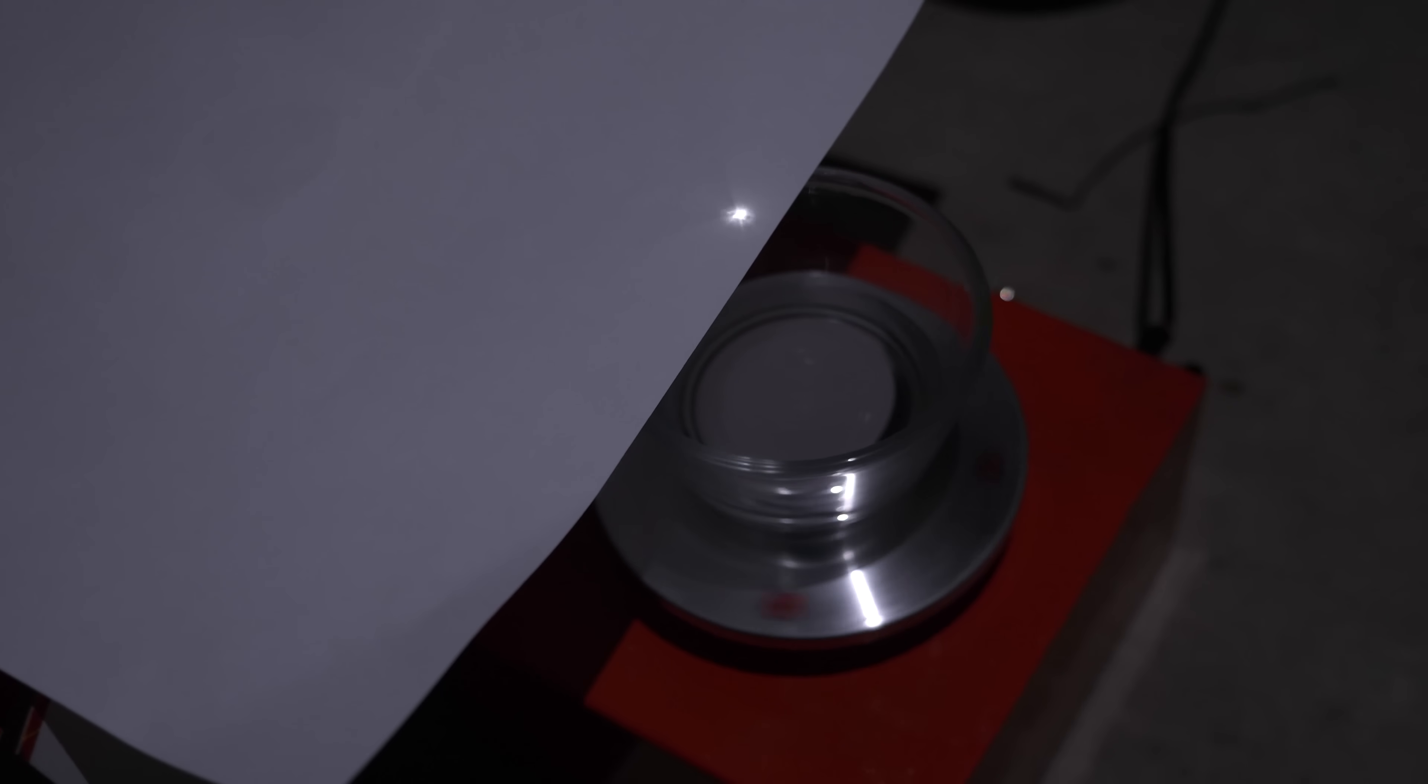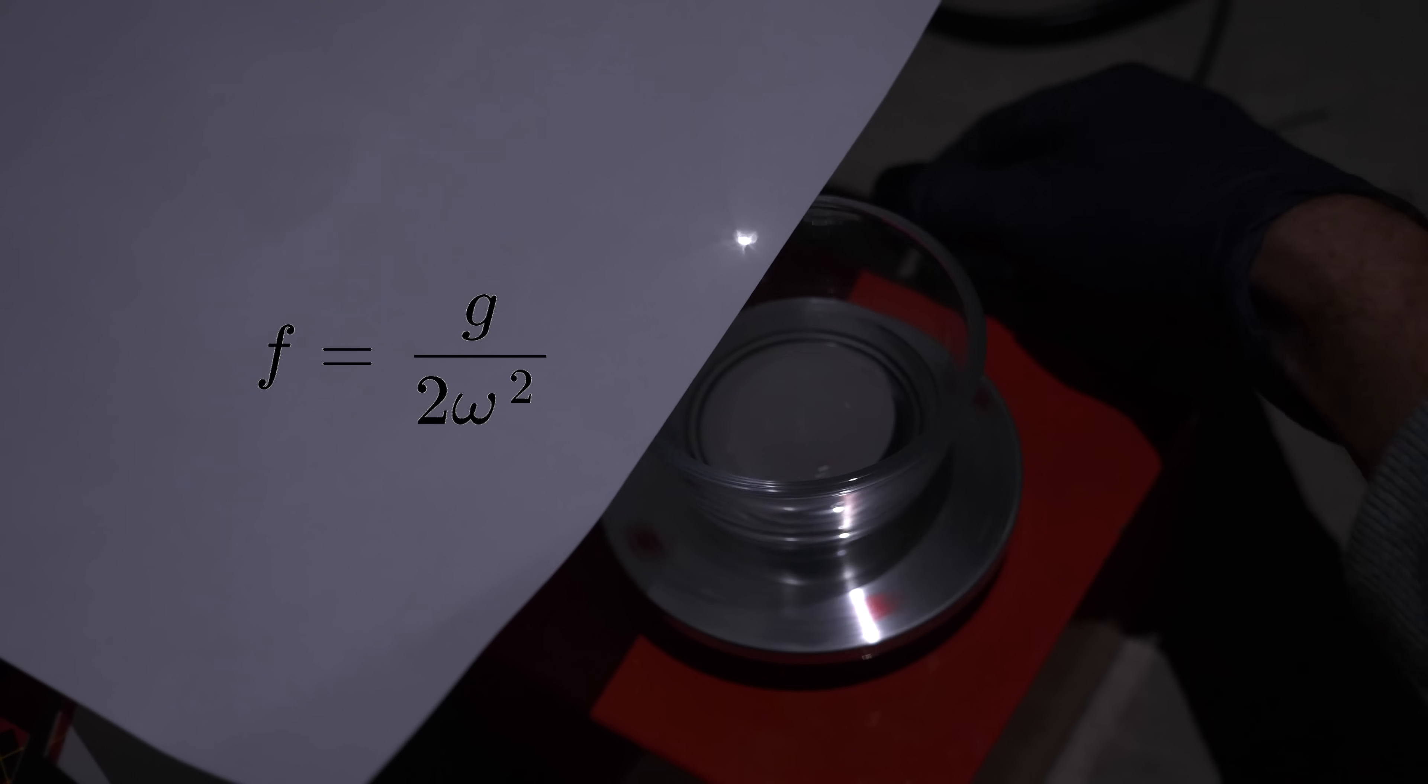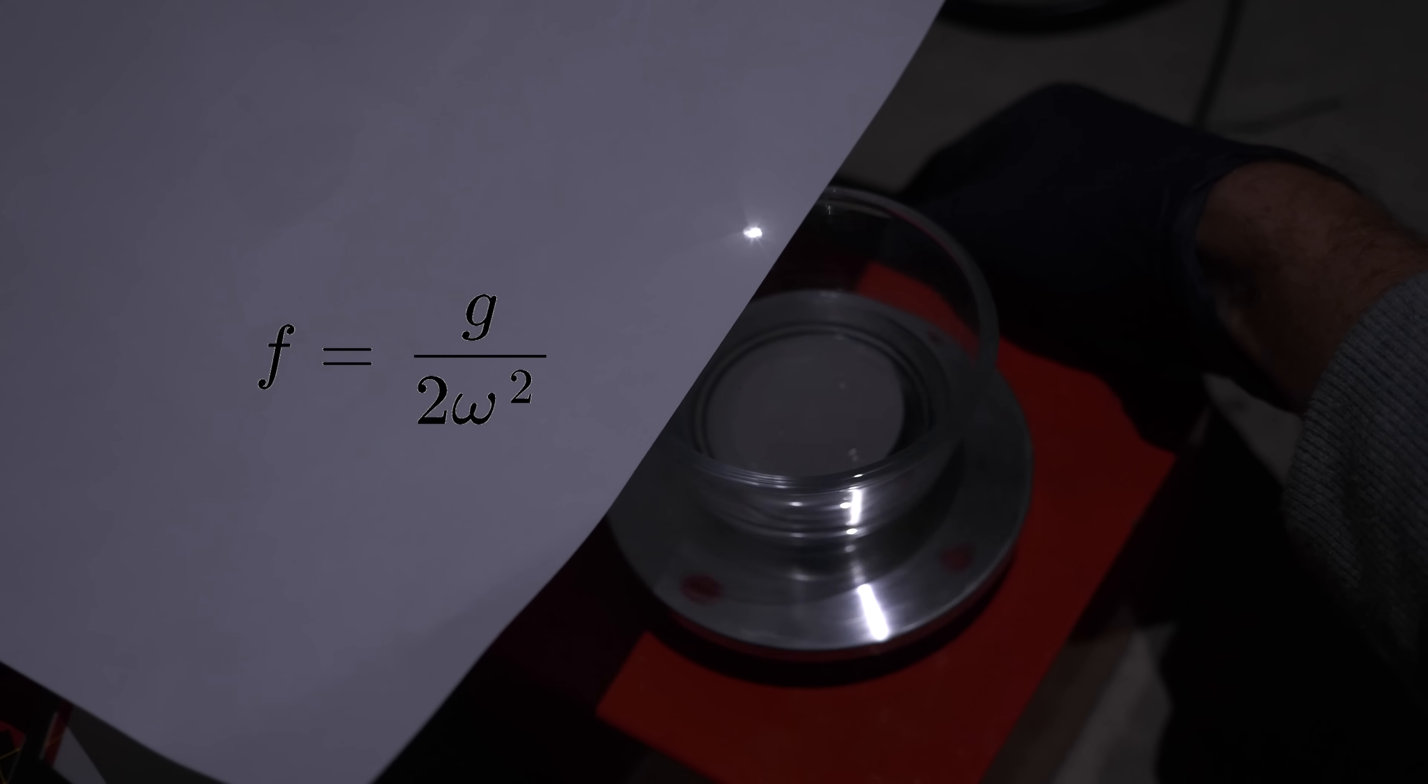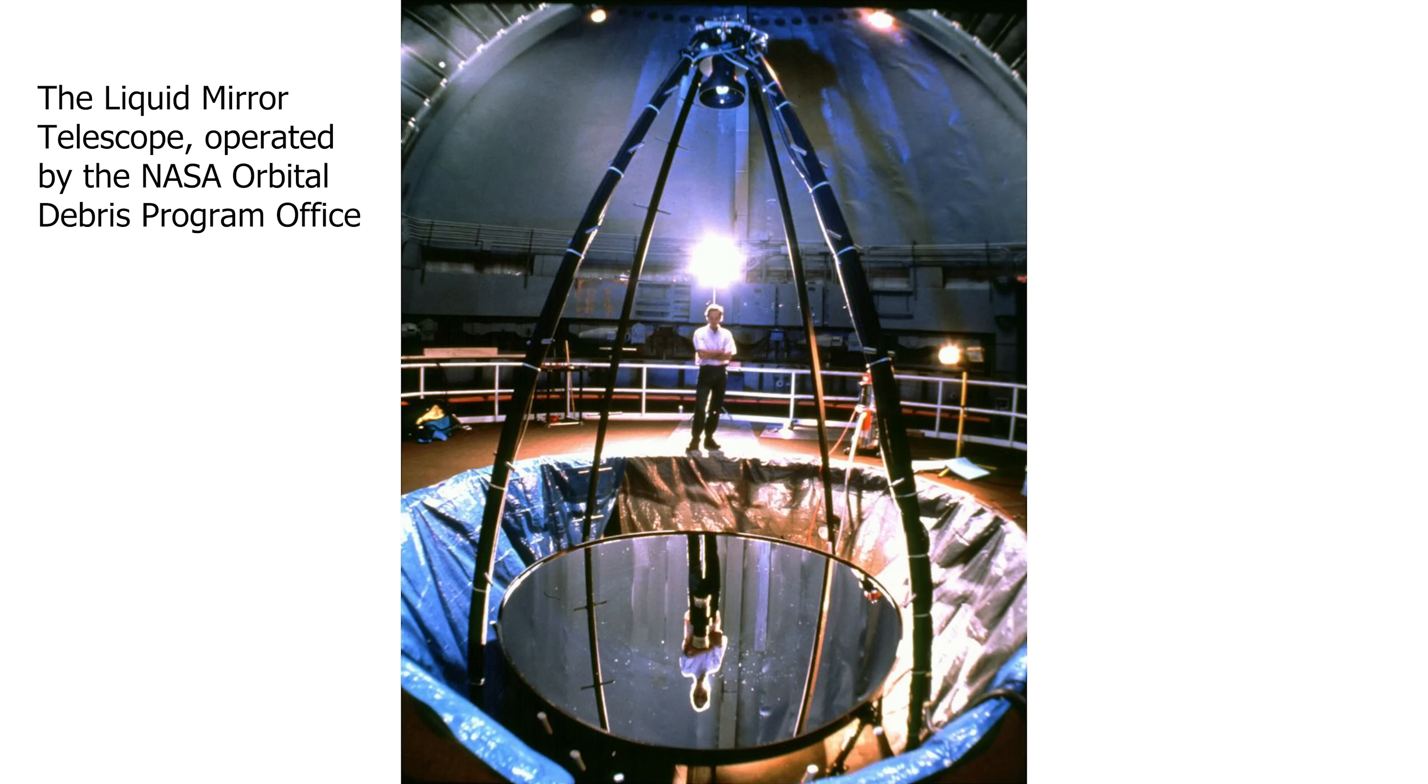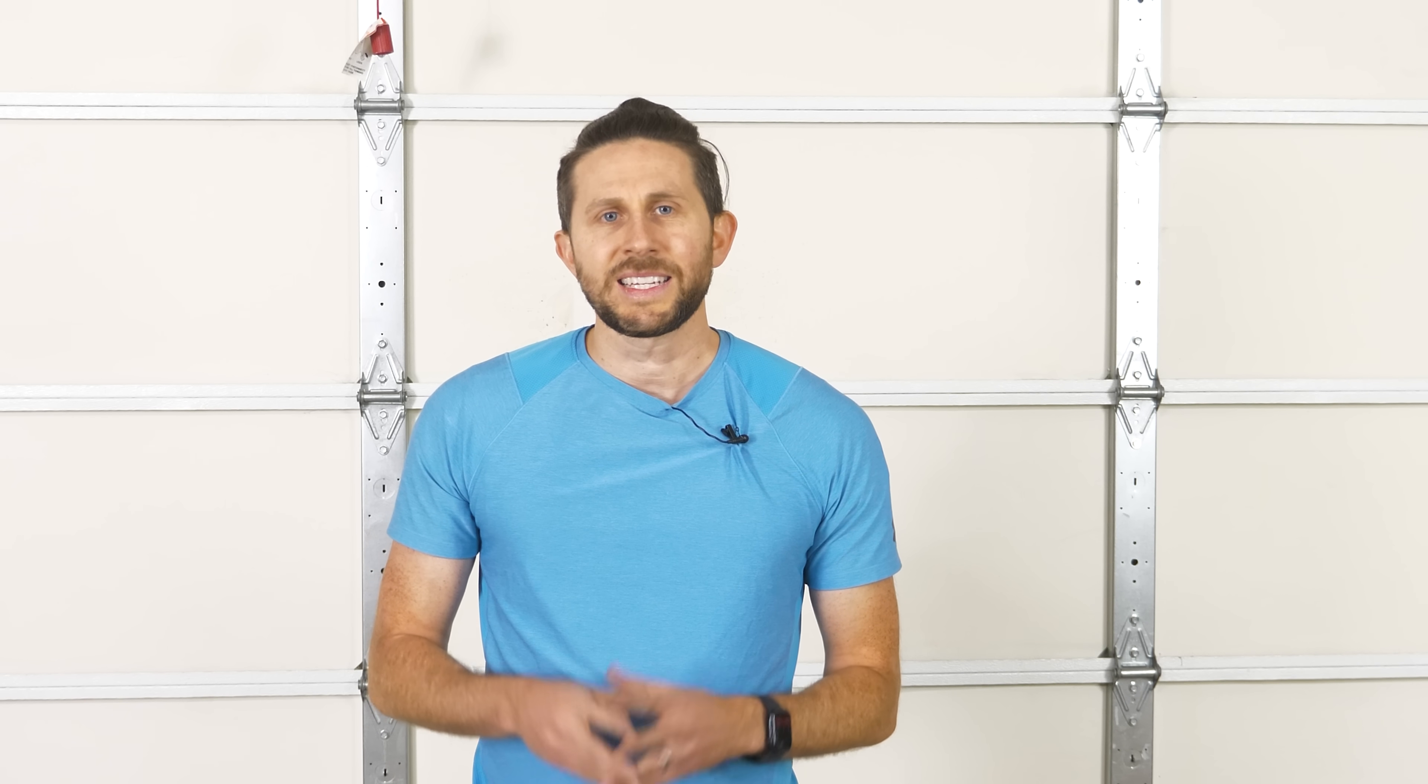So the focal length of this mirror is just the gravitational constant divided by two times the angular speed squared. And believe it or not this is actually what they use in real telescopes called liquid mirror telescopes. They have a slowly rotating plate of mercury or gallium alloy and they spin it to form a perfect parabola that they use as the telescope's mirror. These types of telescopes are beneficial because you can have a huge mirror that costs around 25 times less than a glass mirror.